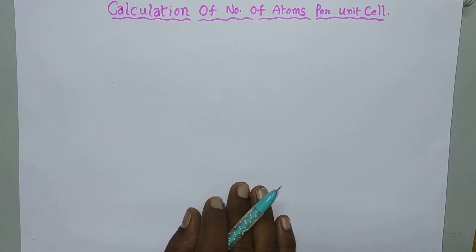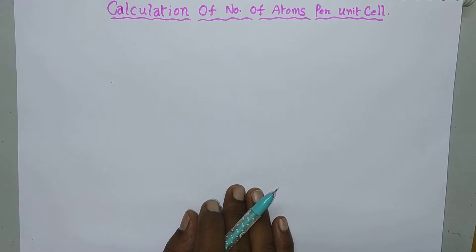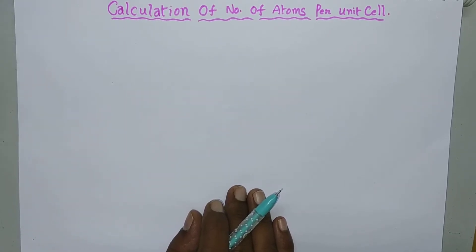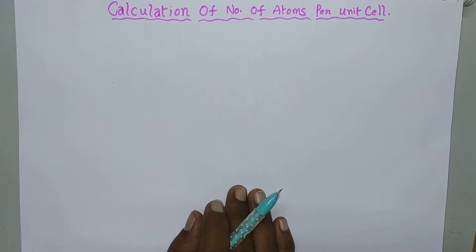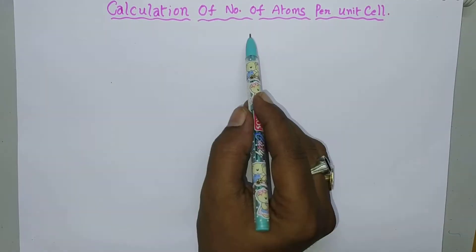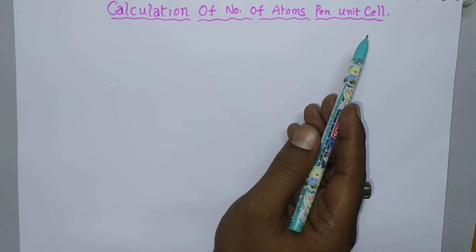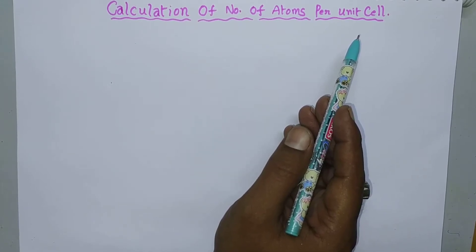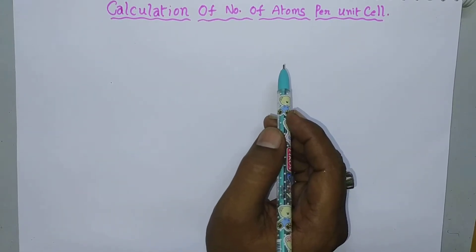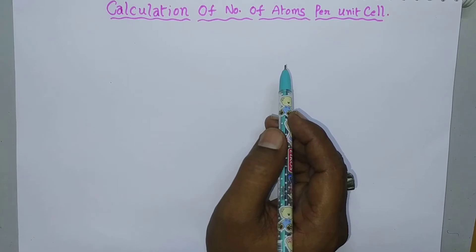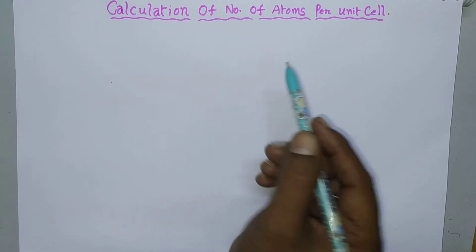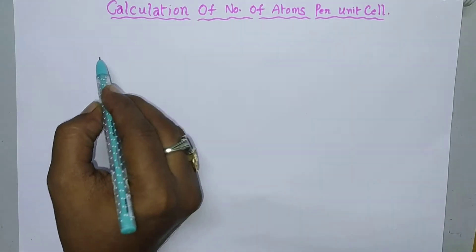Hi students, today in this session we are going to discuss how to calculate the number of atoms per unit cell. A unit cell means the smallest repeated pattern from which a crystal lattice is developed. There are mainly three types of unit cells.